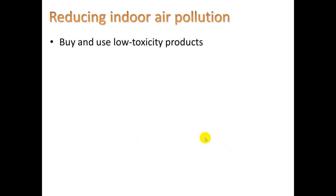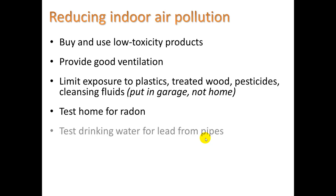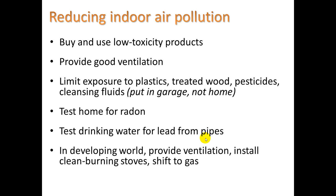How can we reduce indoor air pollution? Number one: buy and use low-toxicity products like low-VOC paint. Provide good ventilation. Limit exposure to plastics, treated wood, pesticides, and cleaning fluids — keep them in the garage, not inside your home. Test your home for radon, and test again a few months later because radon levels can vary weekly or monthly. Test your drinking water for lead from pipes — if your house is older it might have lead solder; if it's newer than around 1980 it's fine. In the developing world, provide ventilation and install clean-burning stoves or shift to burning gas.